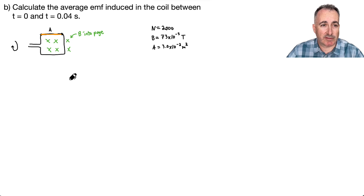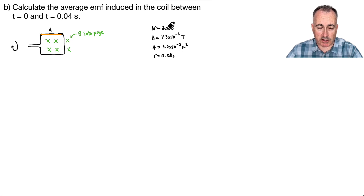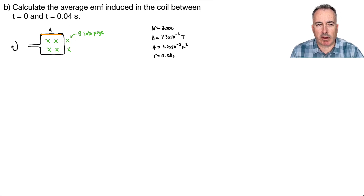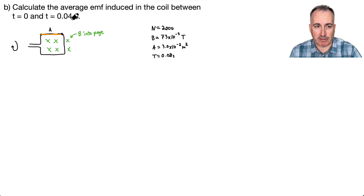In part B, we're supposed to find the average EMF induced in the coil between T equals 0 and T equals 0.04. Remember, the overall period was 0.08 seconds. I've rewritten the facts so I don't have to keep going back and forth. From T equals 0 to T equals 0.04, that's just half a rotation.